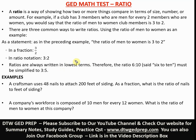So today's topic is ratio. A ratio is just a way of showing how two or more things compare in terms of size, numbers, or amounts. For example, if a club has three members who are men for every two members who are women, you would say the ratio of men to women is three to two, because there are three men and two women.